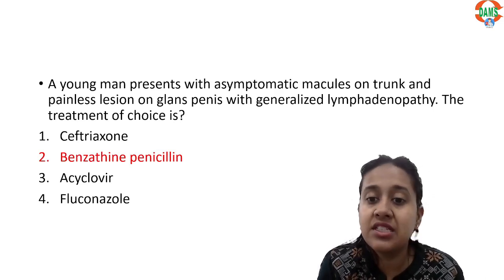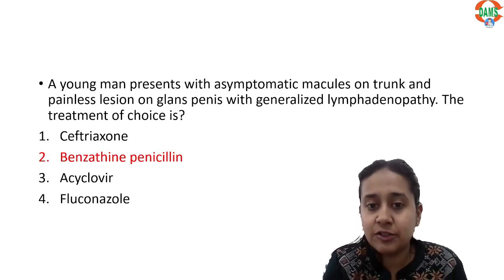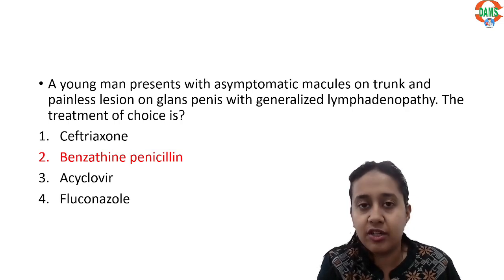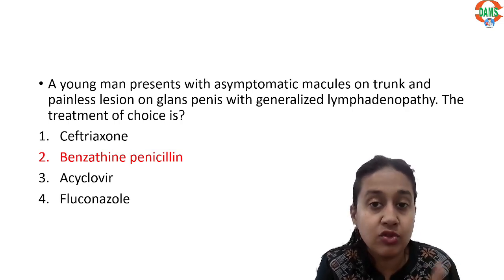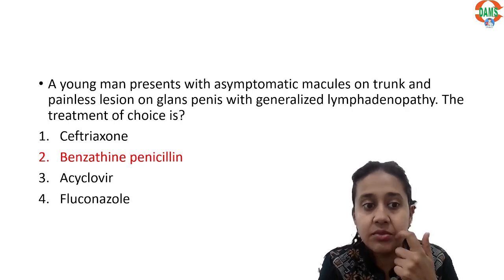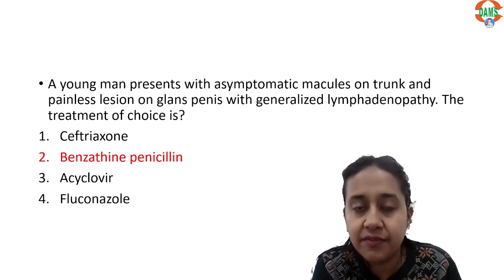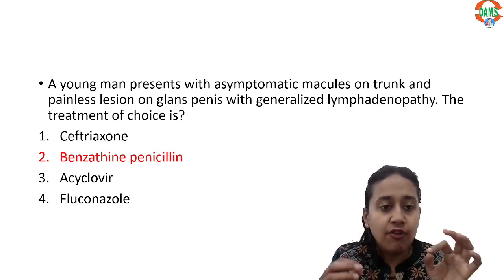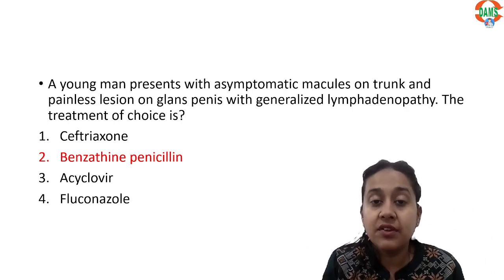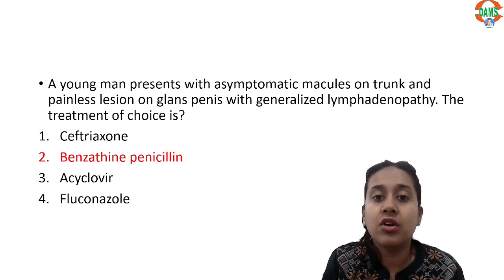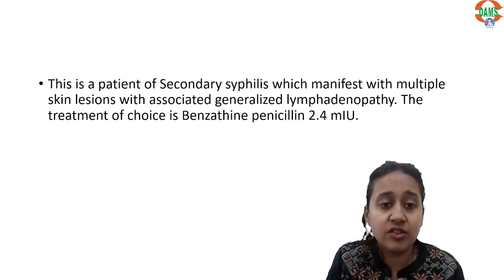The next question: a young man presented with asymptomatic macules on the trunk, a painless lesion on the glans penis, with generalized lymphadenopathy. What is the treatment of choice? In clinical case-based questions, we must first make a diagnosis. Asymptomatic macules and painless lesions on the genitals with generalized lymphadenopathy is a diagnosis of secondary syphilis. For secondary syphilis, the treatment is benzathine penicillin, given intramuscularly at a dose of 2.4 million international units. The correct answer is option number two.